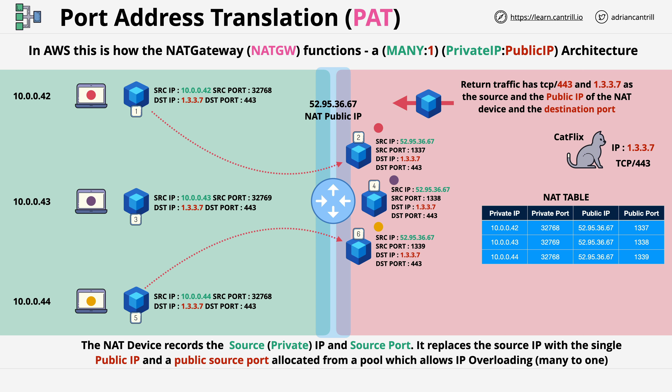The destination IP will be the NAT device's public IP, so 52.95.36.67, and the destination port will be the public source port the NAT device initially translated to. In this case, that public source port represents the session of the top left laptop.